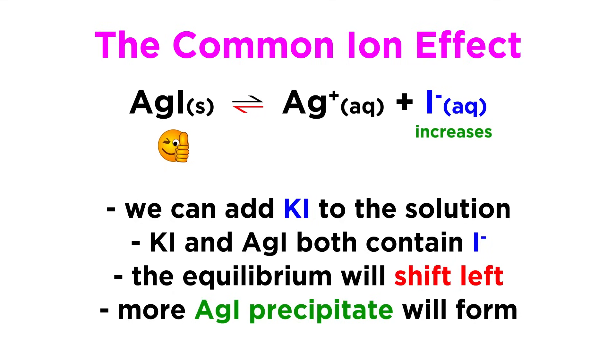If the equilibrium shifts left, that means more silver iodide precipitate will form, so this is a method of promoting precipitation.